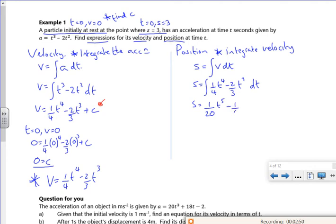Add 1 to the power, divide by the new power, minus 1 over 6 t to the 4 plus c. Now I'm told that when t is 0, s is 3. So 3 is 1 over 20 of 0 to the 5 minus 1 over 6 of 0 to the 4 plus c. So you can see that c is 3 this time there.